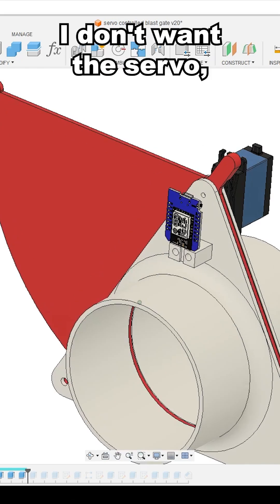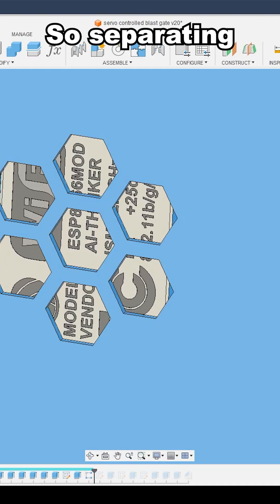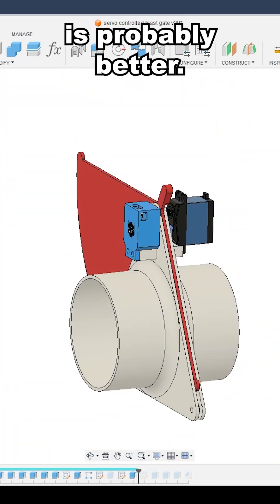This is a Wi-Fi chip. I don't want the servo turning on and off to interfere with those Wi-Fi signals, so separating those two pieces out is probably better.